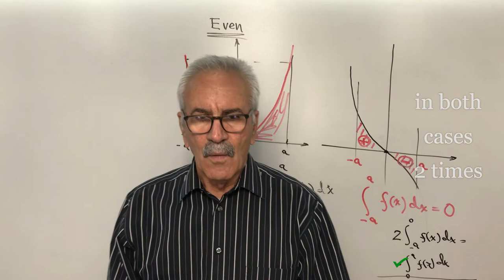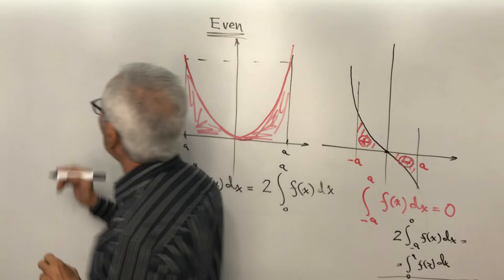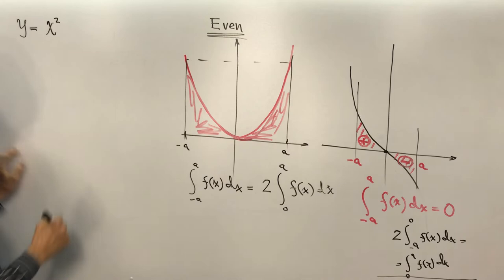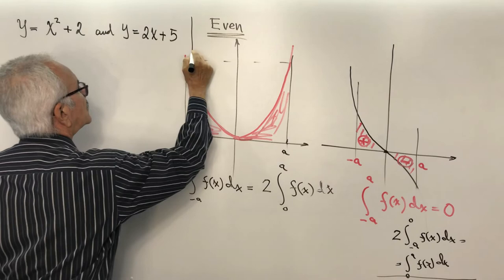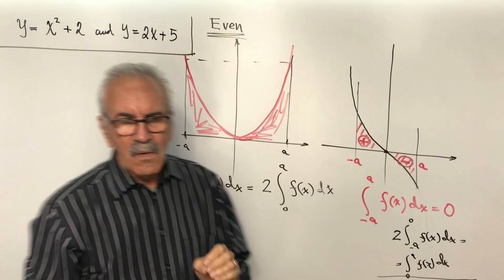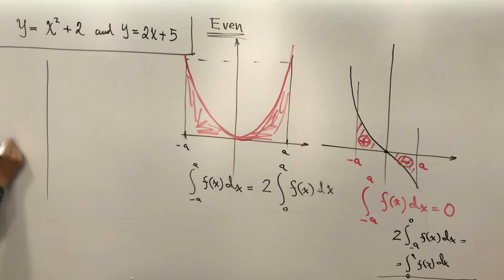Now we are ready to solve one example. Example number one from the notebook, page 144: find the area between y = x² + 2 and y = 2x + 5. This is our question. You have to know the functions you are working with. Let's represent x² + 2 — this is a parabola. When x = 0, y = 2; when x = 1, y = 3.